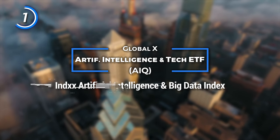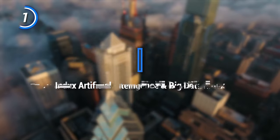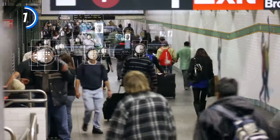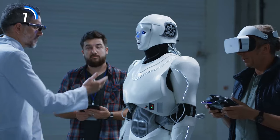On the other hand, AIQ follows the Index X Artificial Intelligence and Big Data Index. It focuses on companies that potentially stand to benefit from the development of artificial intelligence in their products or services. Interestingly, it does this with global exposure, not only focusing on US companies. You'll find holdings like Alibaba, IBM, ServiceNow, Oracle, Tencent Holdings, and Meta. The focus on AI gives it a more specialized strategy compared to IETC's broader tech approach.